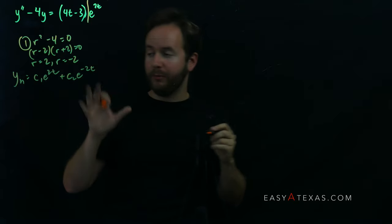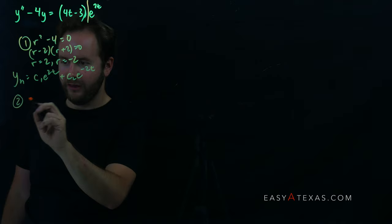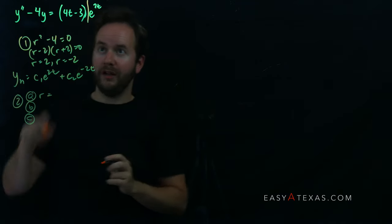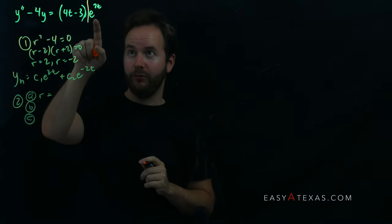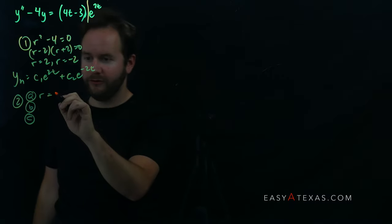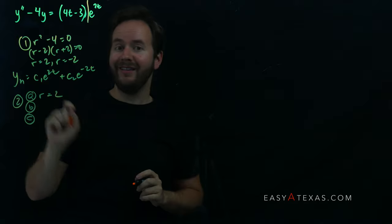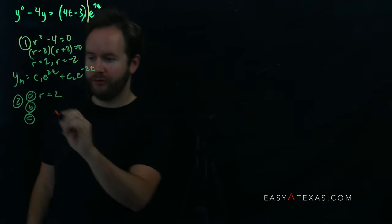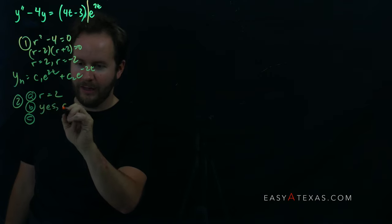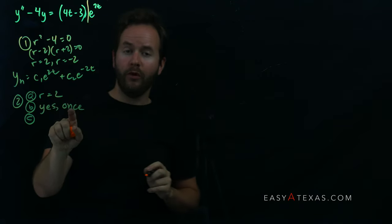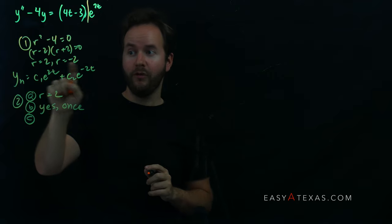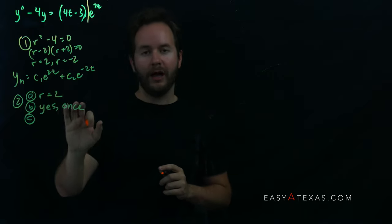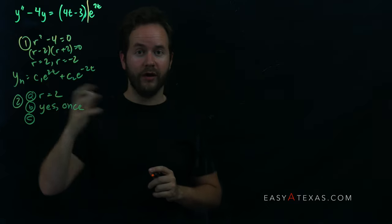Step 2, parts a, b, c. Part a: the right-hand side is e^(2t), so r equals 2. Part b: does r equals 2 match one of the values found earlier? Yes, it does — it matches r equals 2 once. I say 'once' because there are situations where a value could match more than one root; here it only matches once. We'll discuss how to handle matching once versus twice.